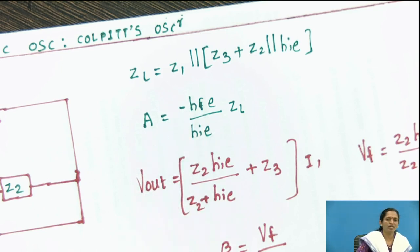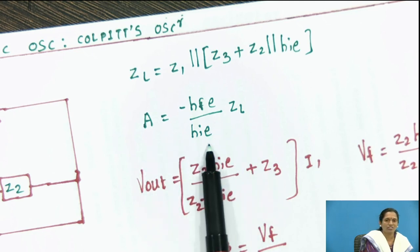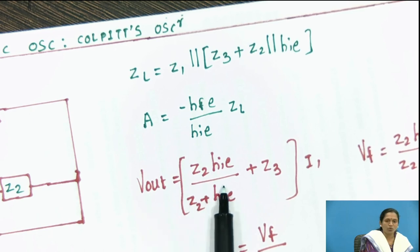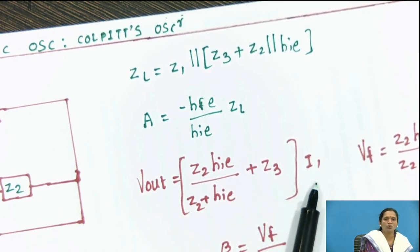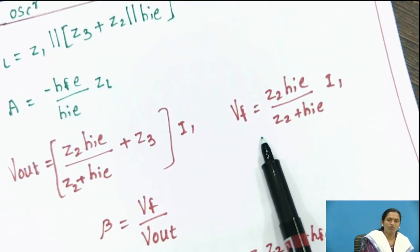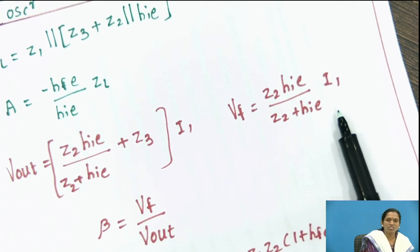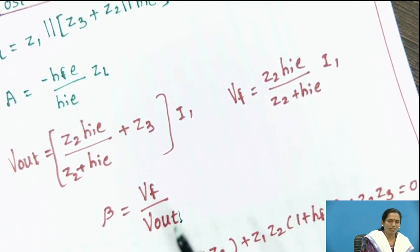As I told you at the time of basic configuration or basic building blocks of oscillator. And as you know that without feedback amplifier gain is nothing but minus HFE by HIE into ZL. Vout is nothing but Z2 HI by Z2 plus HI plus Z3 into I1. This is output voltage of amplifier. Now, feedback voltage is nothing but Z2 HI by Z2 plus HI into I1. So, you can see here, beta is VF divided by Vout.